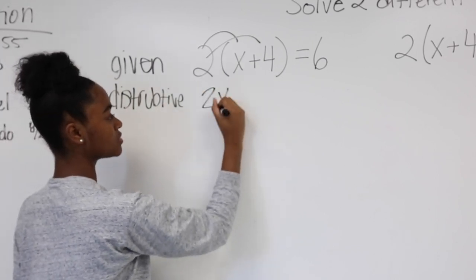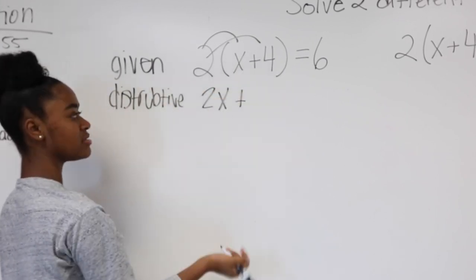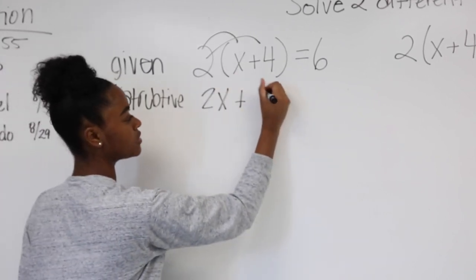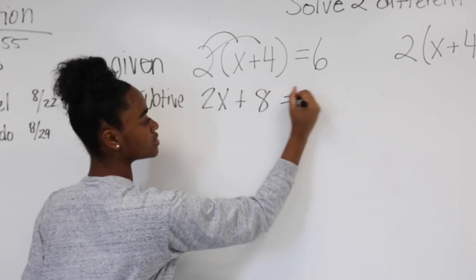So that's 2x because that's a 1. 2 times 2 is 1 and 2 times 4 is 8. And you just bring that 6 down.